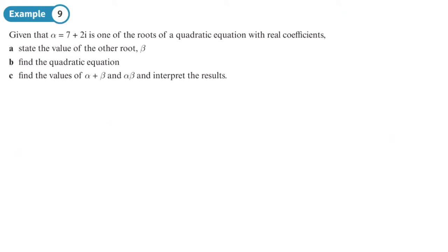Given that alpha is one root of a quadratic equation with real coefficients, state the other root. The other root is beta, the conjugate of alpha, which is 7 minus 2i.